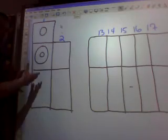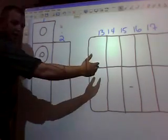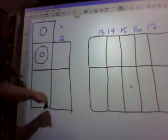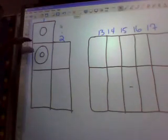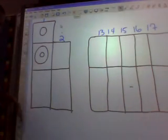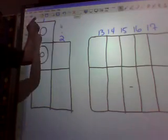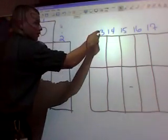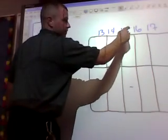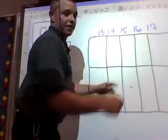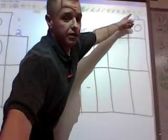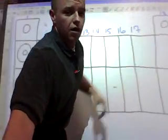This is a blank periodic table that I have filled in. We have periods 1, 2, and 3, and we have groups 1, 2, 13, 14, 15, 16, 17, and 18.